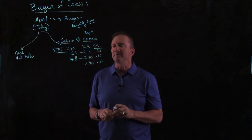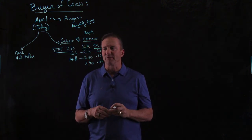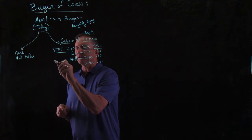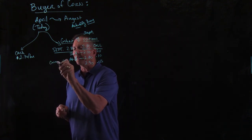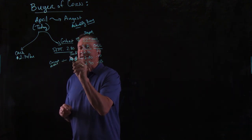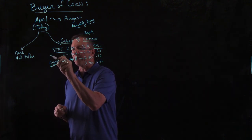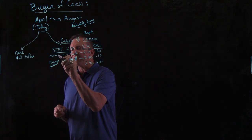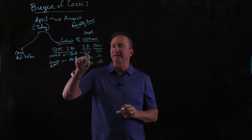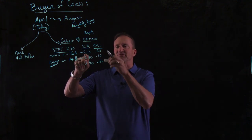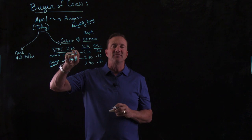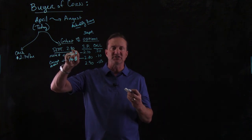This term in the money means we're making money right away. At the money is the current market price. In the money means that we are making money immediately. That's because we could buy it for $2.70 — that's the right of a call. Buy it at $2.70, but you're going to turn around and sell it for $2.80 and make $0.10 right away.